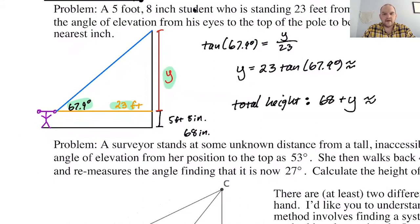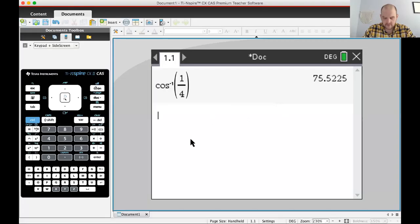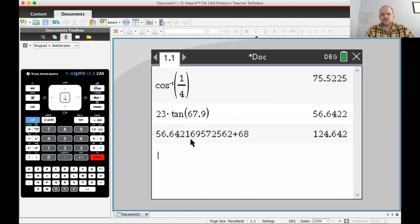I'm going to go to the calculator and just calculate these. So here I want to do 23 tangent of that 67.9. Make sure you're in degrees. Like always, first thing you do, check that. So yeah, we get this. And then I want to add to that 68. So 124.642, but it says to the nearest inch. So I'm going to say this was 57 inches. 57 inches. That doesn't make any sense. Oh my gosh. This is in feet. So this is feet. This is 56.6422 feet. Okay. So let me write that down. 56.6422 feet.